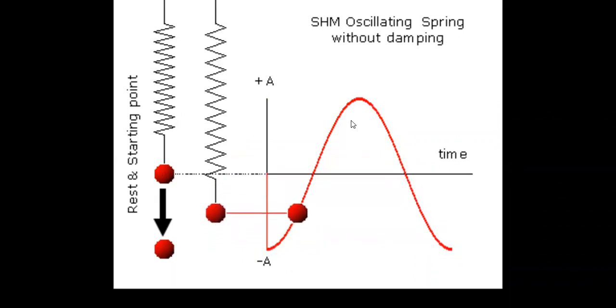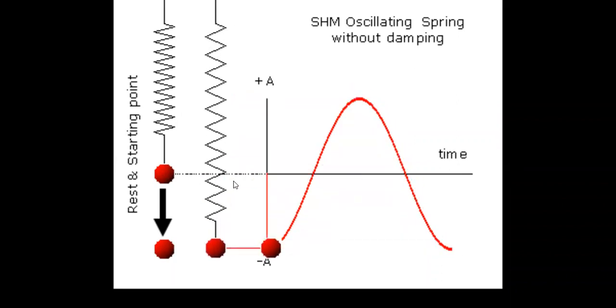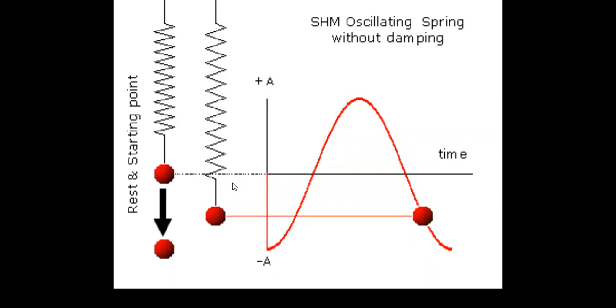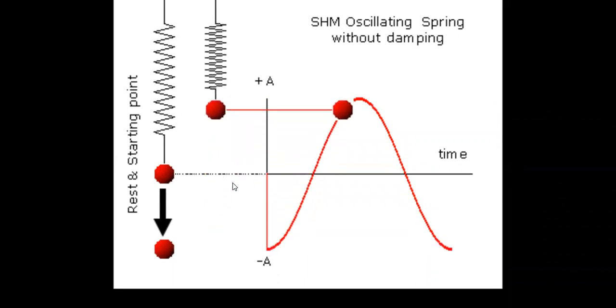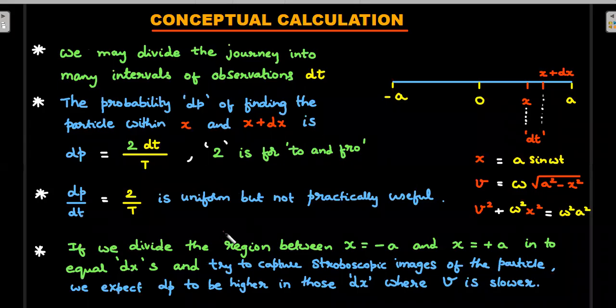I'll show you a stroboscopic photograph also in which you take a particle motion and you switch on and off the lights at equal intervals of time, and then you take the photograph of the particle. And these photographs are overlapped on one another. And in that, the crowded nature of the particle snapshots at the extreme position will depict the same thing. Let me show you that also, right.